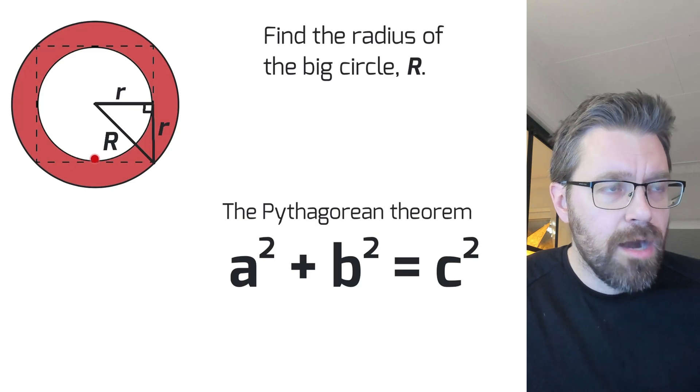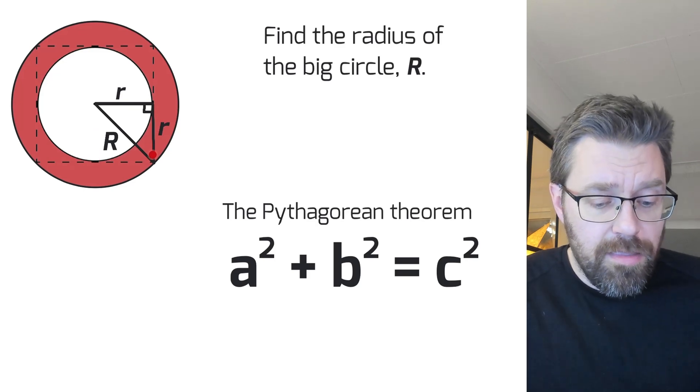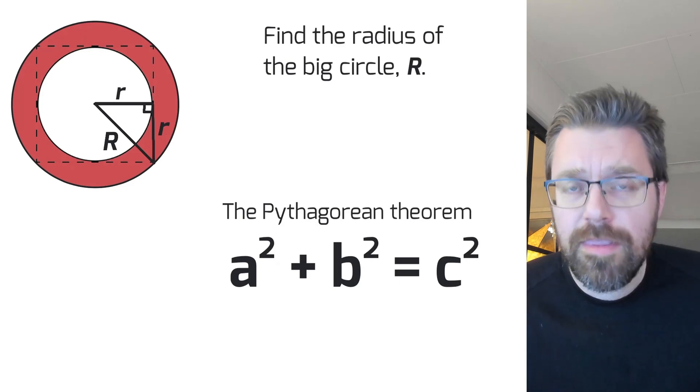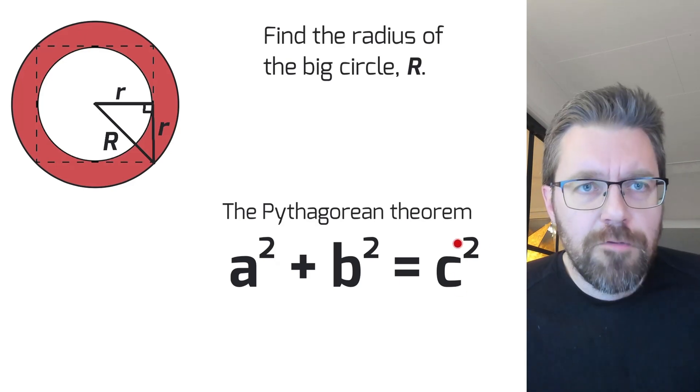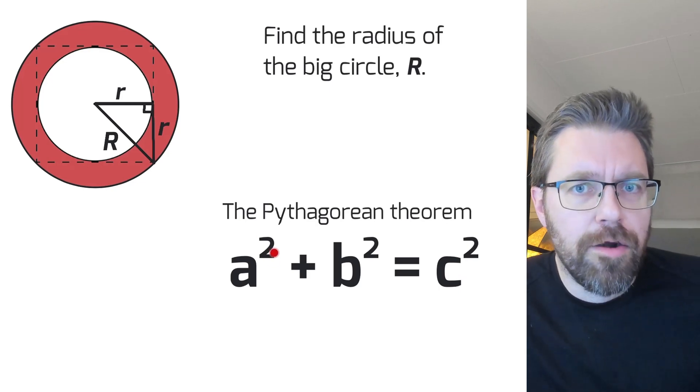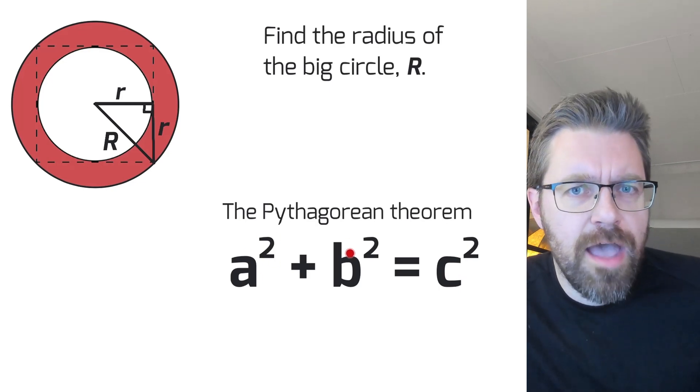The Pythagorean theorem tells us that if we square the longest side, it is equal to the sum of the square of the two smaller sides in a right triangle.